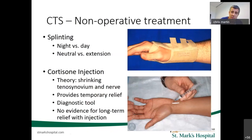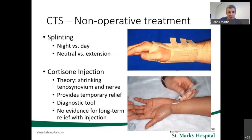But there's no evidence for long-term relief or a long-term change in the course. I generally use an injection in instances of pregnancy, when pregnant women get bad carpal tunnel syndrome because of the amount of fluid the body retains. That tends to be a reversible process — shortly after delivery, most pregnancy-related carpal tunnel cases will resolve. So an injection is nice; it can help get people over symptoms, and in their condition being pregnant, they're not looking to have surgery anyway.